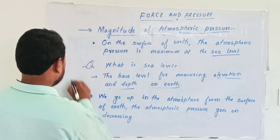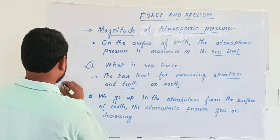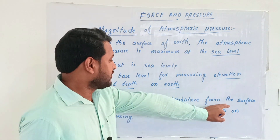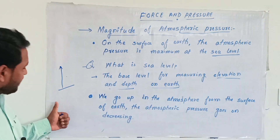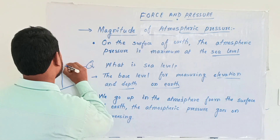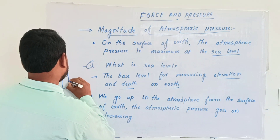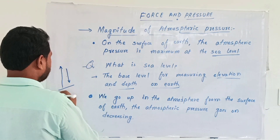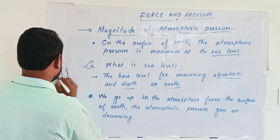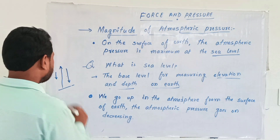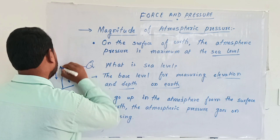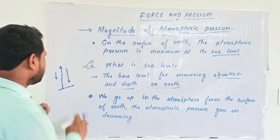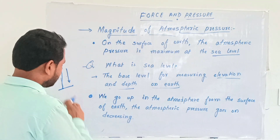Next point: when we go up from the surface of earth, the atmosphere is above the surface of earth, and as we go up, the atmospheric pressure keeps decreasing. This is because atmospheric pressure always works by the surroundings. When we go up from the surface of earth, the atmospheric pressure is decreasing.